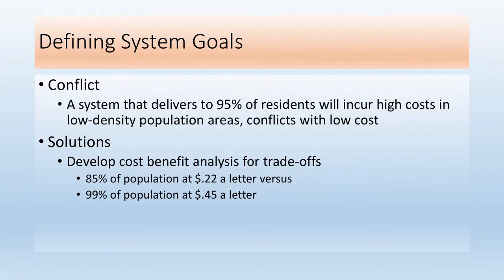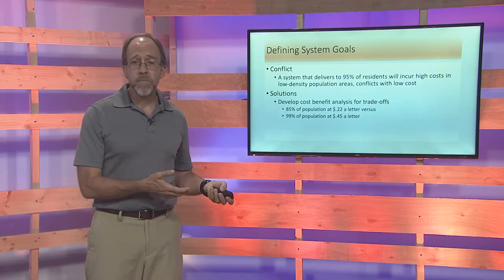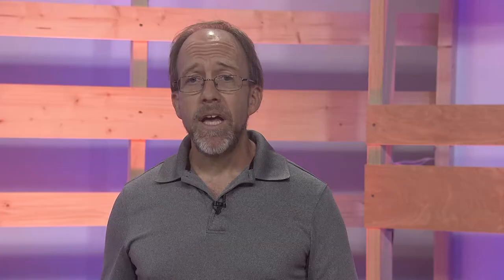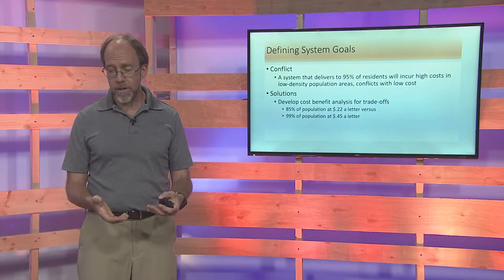For example, if you're trying to deliver speedy service to the entire U.S. population, it's going to come at the expense of another goal — typically cost. Hitting 85% of the population might cost 22 cents per letter, but going to 95% might skyrocket to 45 cents, more than double. Rural customers are much more expensive to deliver to than urban customers. You can change parameters — say, two-day service to 85% and three-day service to the next 10% — which changes the goals and the design.